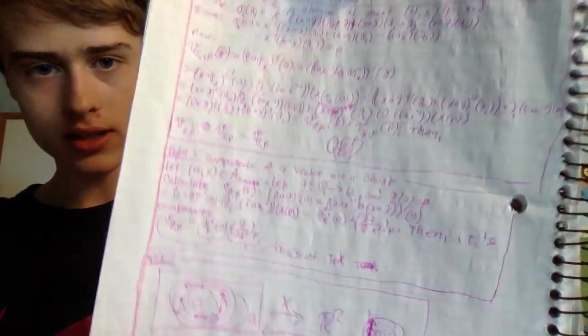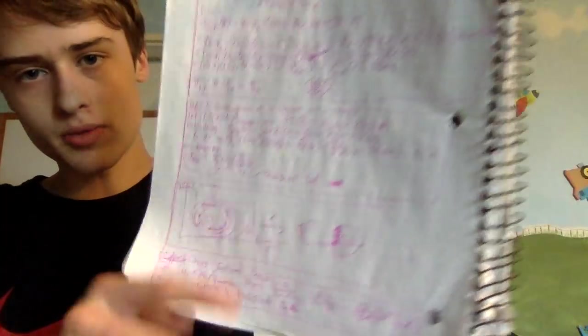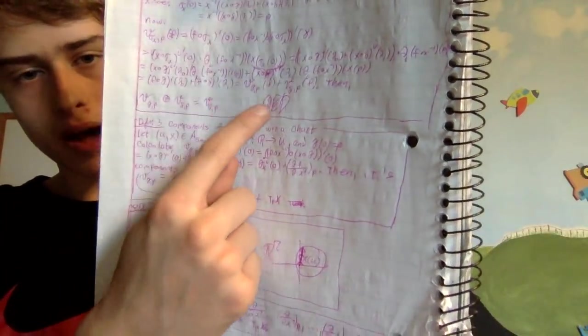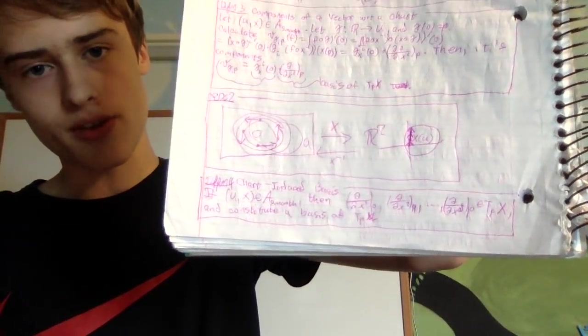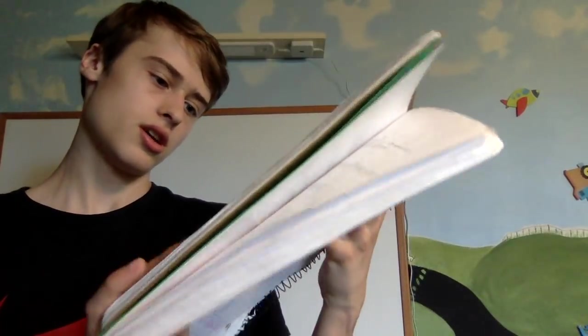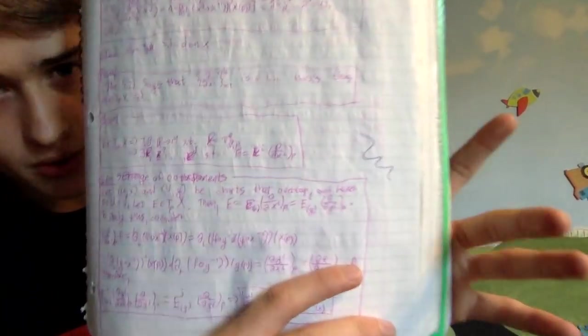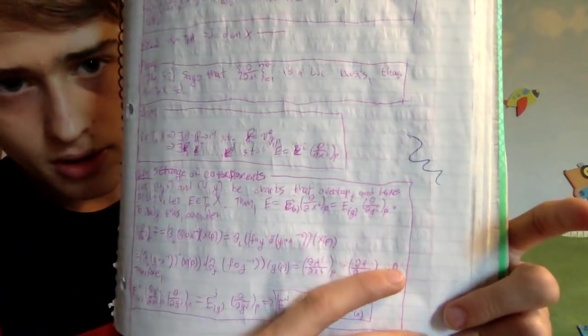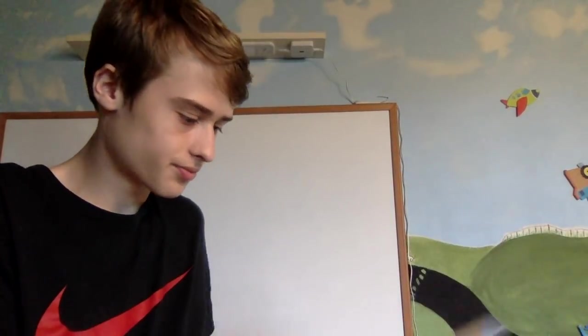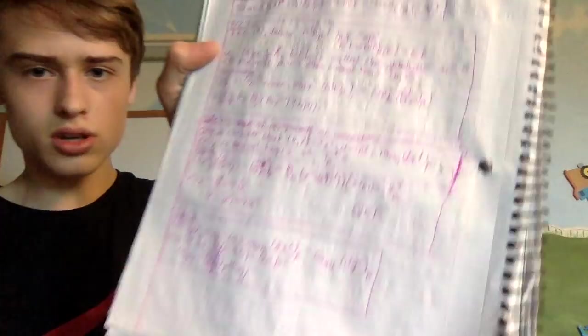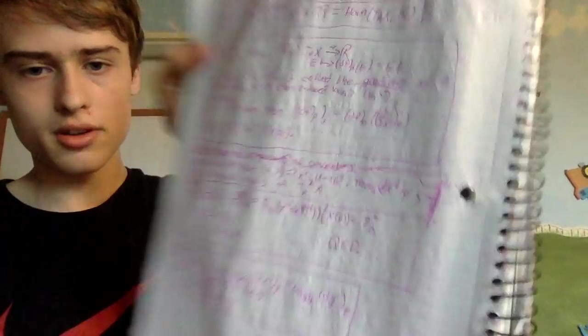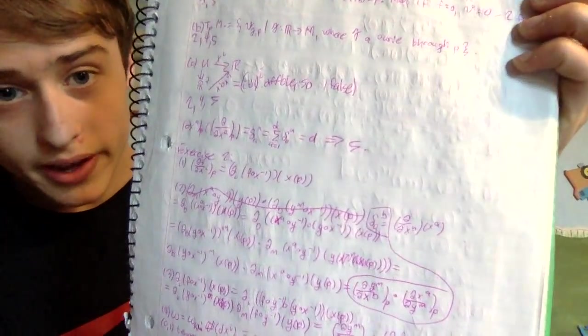Here I have stuff about how it's a vector space, stuff about charts. I used to write QED instead of the box - I don't know why. Here I have stuff on tangent space. I think I switched and used X here for manifolds even though I should use M. And there's the transition between the bases. This is cool covector stuff. On the back we have the homework - I'm gonna skip past that one.